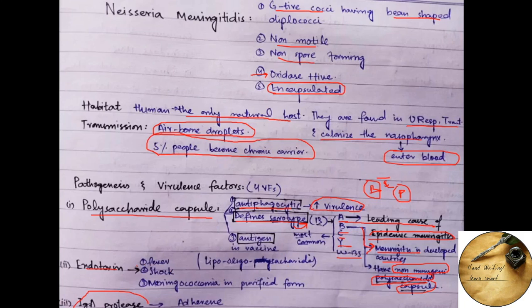The third important point regarding the polysaccharide capsule is that it can be used as antigen in vaccine.